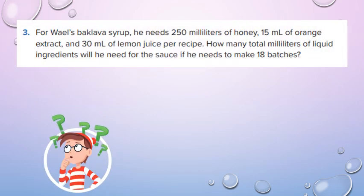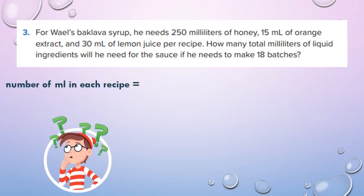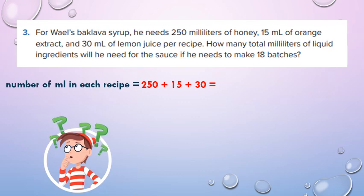Exercise 3. For Wa'il's baklava syrup, he needs 250 ml of honey, 15 ml of orange extract, and 30 ml of lemon juice per recipe. He will put 250 ml of honey, 15 ml of orange, and 30 ml of lemon. How many total ml of liquid ingredients will he need for the sauce if he needs to make 18 batches? We will add the 3 ingredients: 250 plus 15 plus 30. All 3 numbers share the same unit — milliliter — so we will not convert any number. 0 plus 5 plus 0 equals 5, 5 plus 1 plus 3 equals 9, 2. So in each recipe he will put 295 ml.